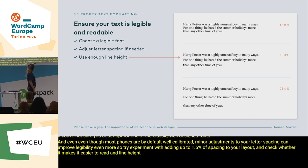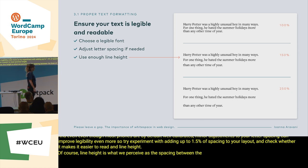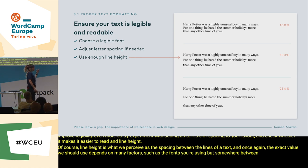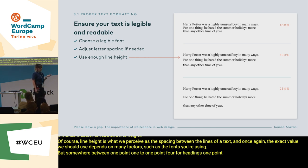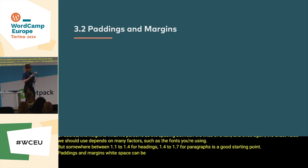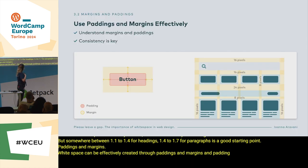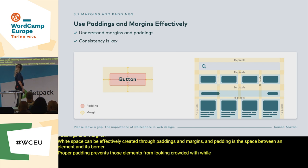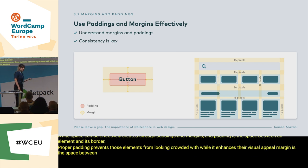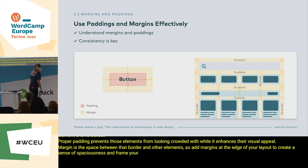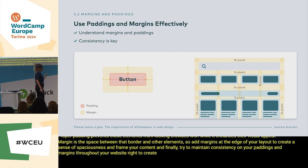Line height is what we perceive as the spacing between the lines of a text. The exact value depends on many factors, such as the fonts you're using, but somewhere between 1.1 to 1.4 for headings and 1.4 to 1.7 for paragraphs is a good starting point. Paddings and margins: white space can be effectively created through paddings and margins. Padding is the space between an element and its border — proper padding prevents elements from looking crowded while enhancing their visual appeal. Margin is the space between that border and other elements. Add margins at the edge of your layout to create a sense of spaciousness and frame your content. Try to maintain consistency in paddings and margins throughout your website to create a sense of unity and visual order.